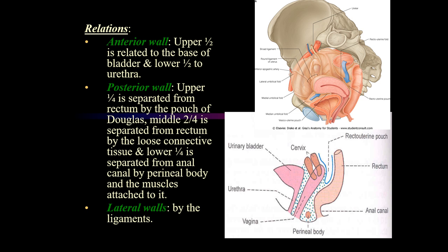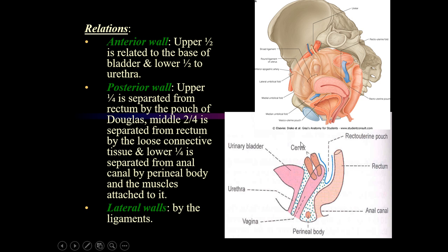Regarding the anterior wall relations: the upper half of the vagina is related to the posterior wall of the bladder or the trigone of the bladder, and the lower half is related to the urethra. This is shown diagrammatically — the upper half is related to the bladder in front and the lower half is related to the urethra.